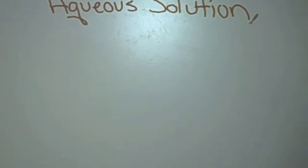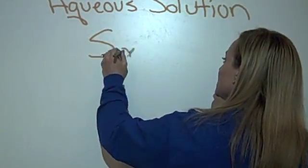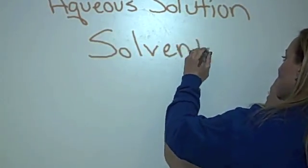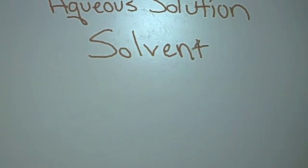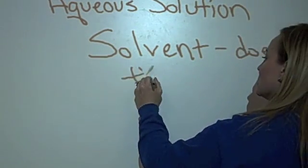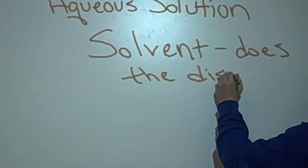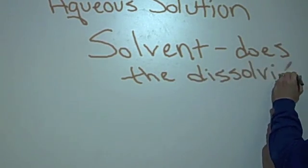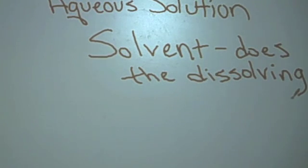There are two parts of a solution that you need to know. The first one is the solvent, and the solvent is the one or the thing that does the dissolving. The solvent does the dissolving.